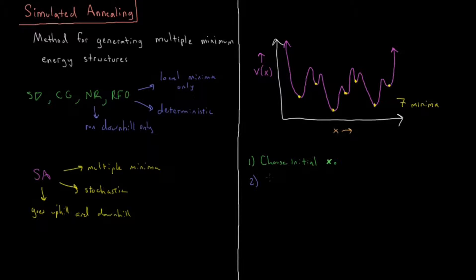Then we are going to propagate the system forward. So x_n goes to x_n+1. And there are various ways you could choose to do this.